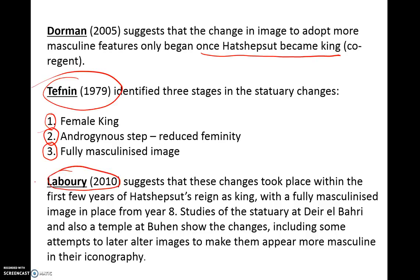Laboree, who is still working in this field, tells us that this change actually took place not over a long period of time, but over a very short period of time. Our evidence suggests that by year seven Hatshepsut is king, and Laboree says that by year eight we've moved through all these stages all the way to the fully masculinized image. So yes, there's experimentation, but it happens in a very short time. Within a few years — specifically by year eight — Hatshepsut has understood that she needs to portray herself, at least in the statuary and reliefs on the walls, with that masculinized iconography in order to show herself as a proper king.